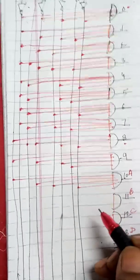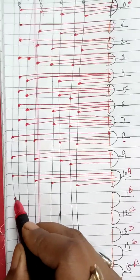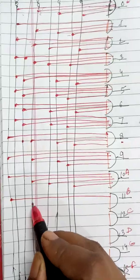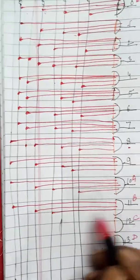Now for B, the binary equivalent is 1011. So 1, 0, 1, 1.